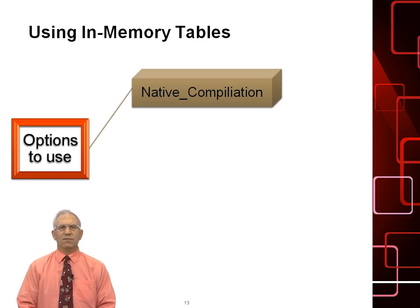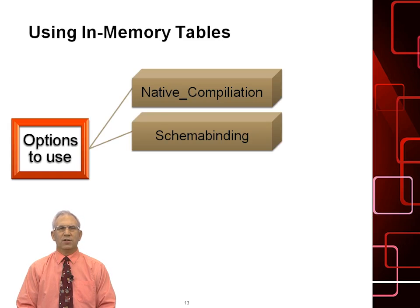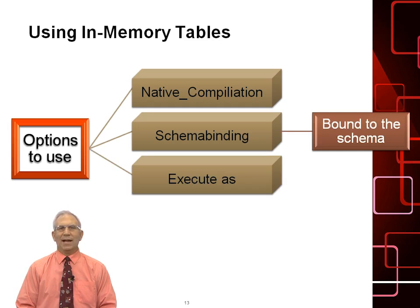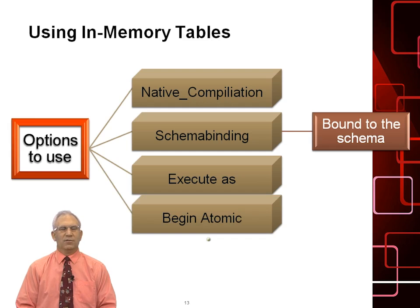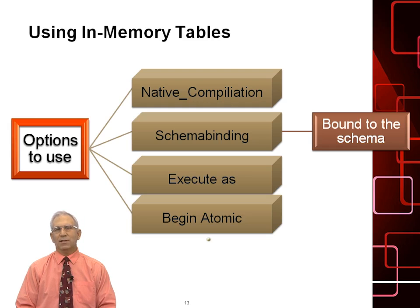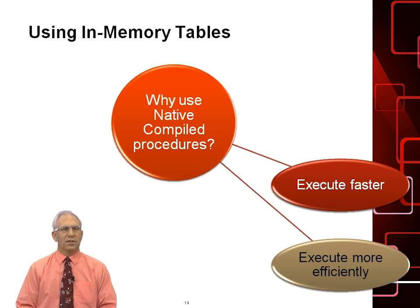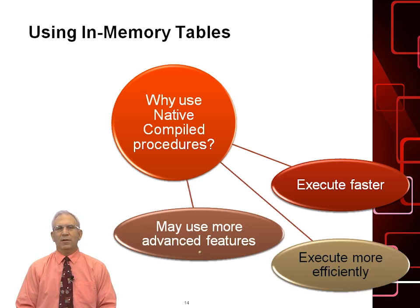The options you would use for a natively compiled stored procedure include the keywords NATIVE_COMPILATION with SCHEMABINDING, where schema binding binds this to a specific schema. Then you give it the EXECUTE AS command — such as EXECUTE AS CALLER, EXECUTE AS OWNER, or EXECUTE AS USER. You also have to give it the keyword BEGIN ATOMIC. So the specific steps are: give it the keyword NATIVE_COMPILATION, specify SCHEMABINDING (optional), EXECUTE AS (optional), and then BEGIN ATOMIC. The reason to use natively compiled procedures is that the code is more efficient, they execute faster, and they have more in-memory advanced features.